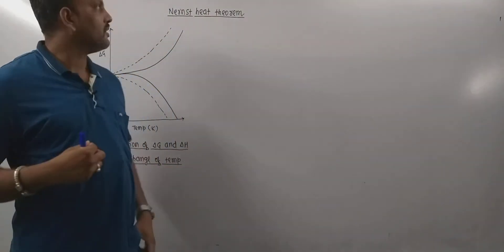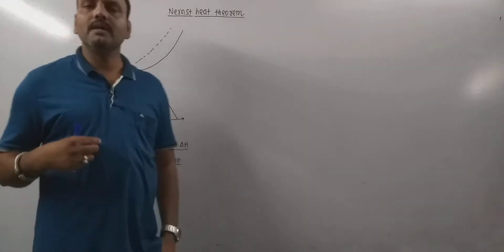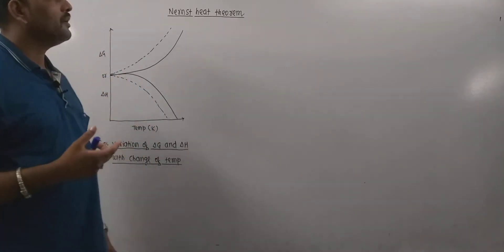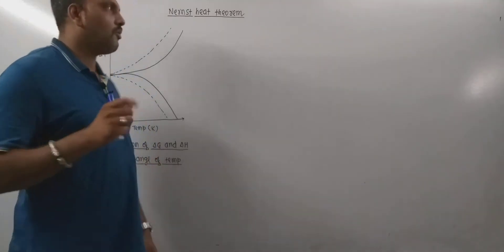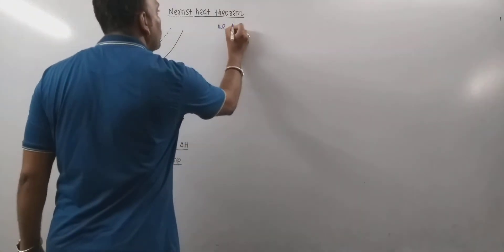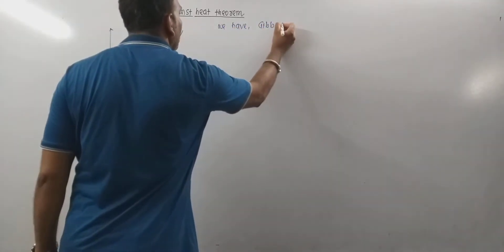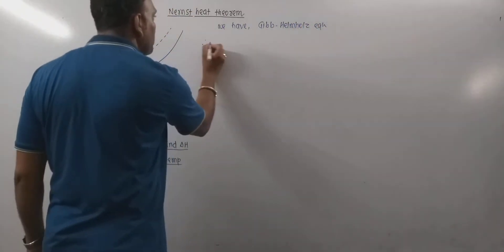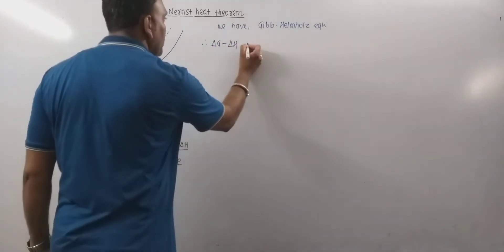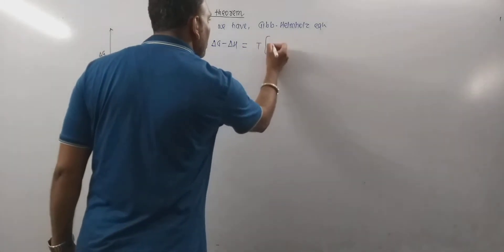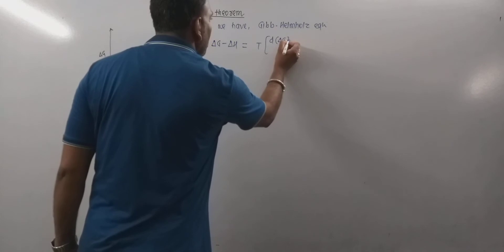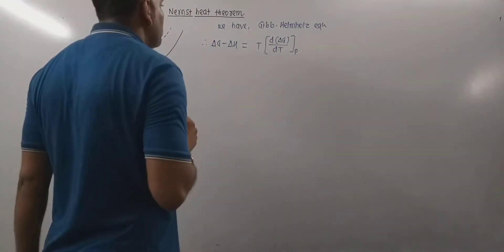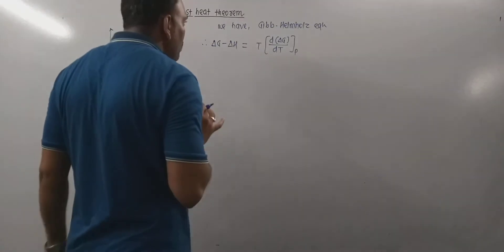Today we are going to discuss the Nernst Heat Theorem. The Nernst Heat Theorem explains the behavior of pure solids — it holds good only in the case of pure solids. Now we have the Gibbs-Helmholtz equation: ΔG minus ΔH is equal to T times d(ΔG)/dT at constant pressure.